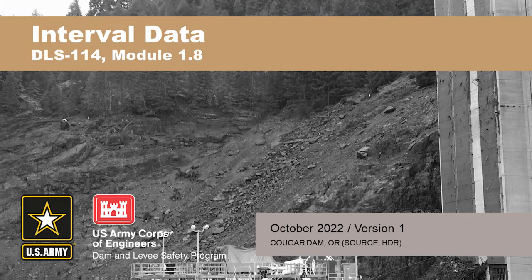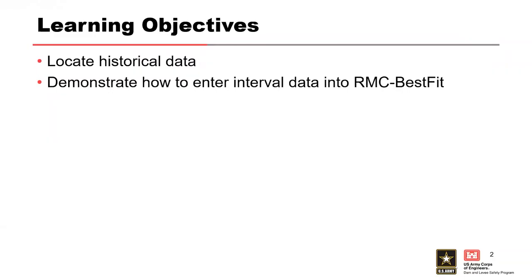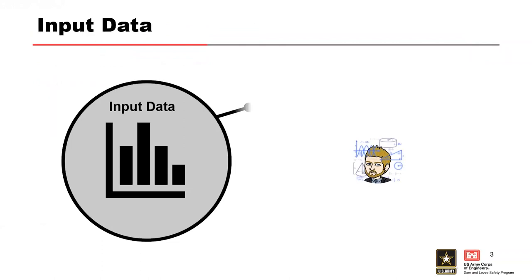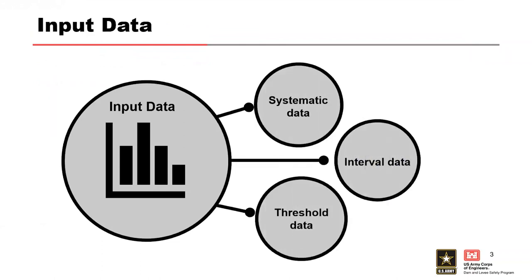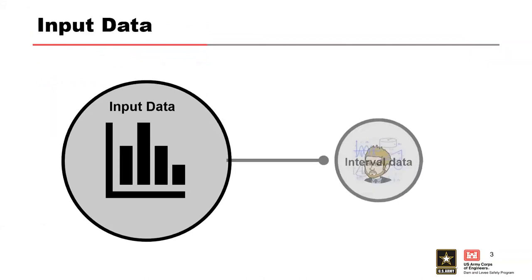We have just spent some time talking about systematic data, and that's going to be the backbone of our inputs that we're going to put into Best Fit. Now we're going to spend some time talking about interval data. RMC Best Fit supports three different types of data: systematic data, interval data, and threshold data. This lecture is going to focus on interval data.